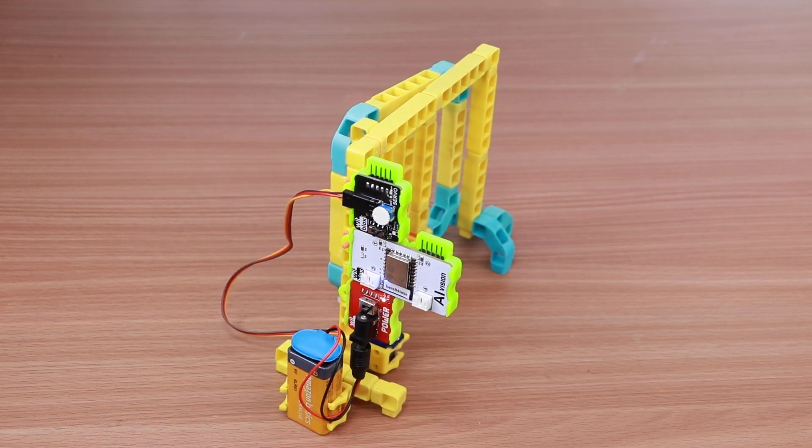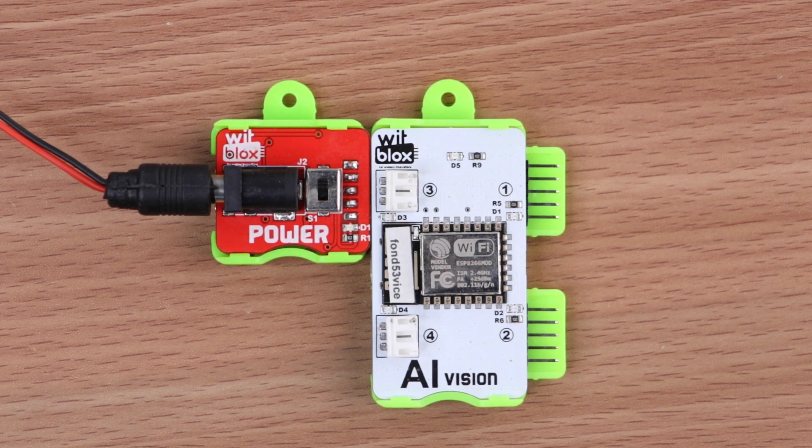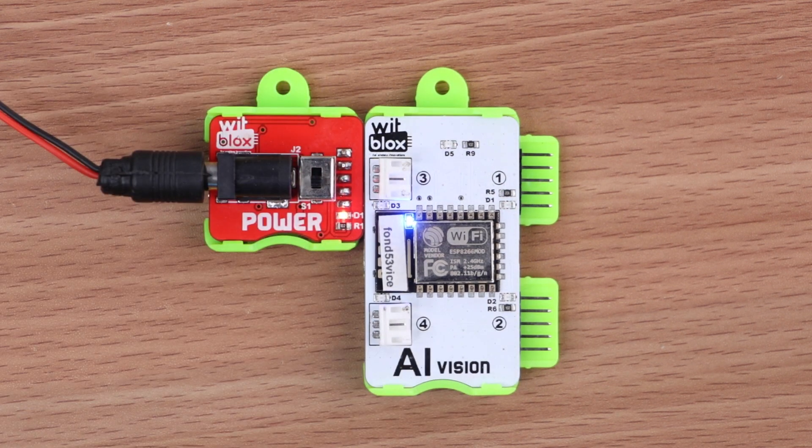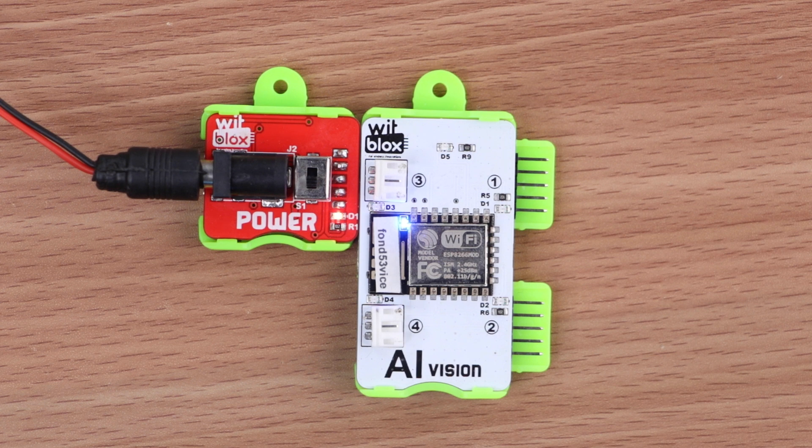There are two main steps to use the AI vision blocks. First, we will see how to connect AI blocks to the internet. Turn on the power blocks. When AI vision receives power, it will create its own Wi-Fi network. This will be indicated with a blue light on the AI blocks.